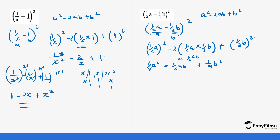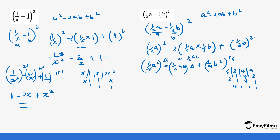You can leave your answer that way, or find the LCM. The LCM of 4, 6, and 9 is 36. Multiplying everywhere by 36: 36 divided by 4 is 9, so we get 9a²; 36 divided by 6 is 6, giving minus 6ab; and 36 divided by 9 is 4, giving plus 4b². So the simplified expression is 9a² - 6ab + 4b².